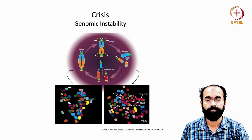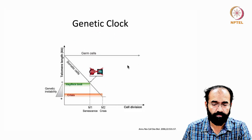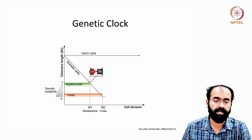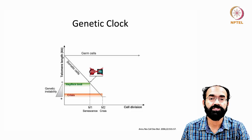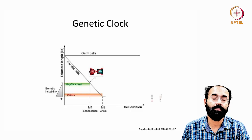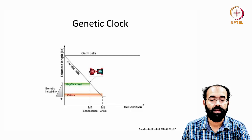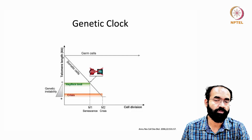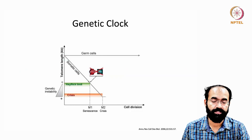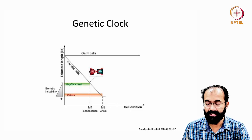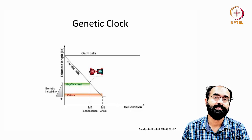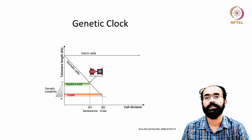Cancer cells do not bother about utilizing energy effectively. Coming back to the genetic clock: as telomere length decreases, it reaches the Hayflick limit — the point at which cells can no longer divide. This is tolerated until a critical length of the telomeres is reached. Once it goes below that threshold, it will eventually lead to a crisis phase, where cells completely stop dividing unless they get a second chance in the form of cancer.